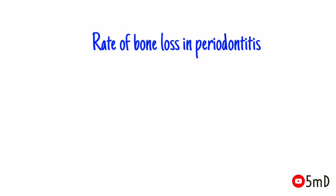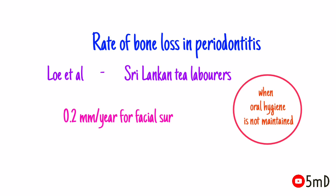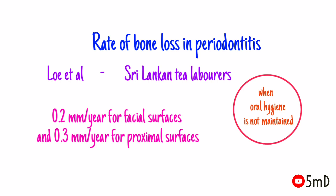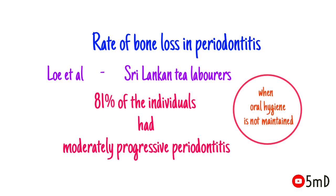What is the rate of bone loss in periodontitis? There is a famous study conducted by Loe et al. on Sri Lankan steel laborers with no oral hygiene. It suggested the rate of bone loss to be 0.2 mm a year for facial surfaces and 0.3 mm a year for proximal surfaces. Approximately 81 percent of individuals had moderately progressive periodontitis.